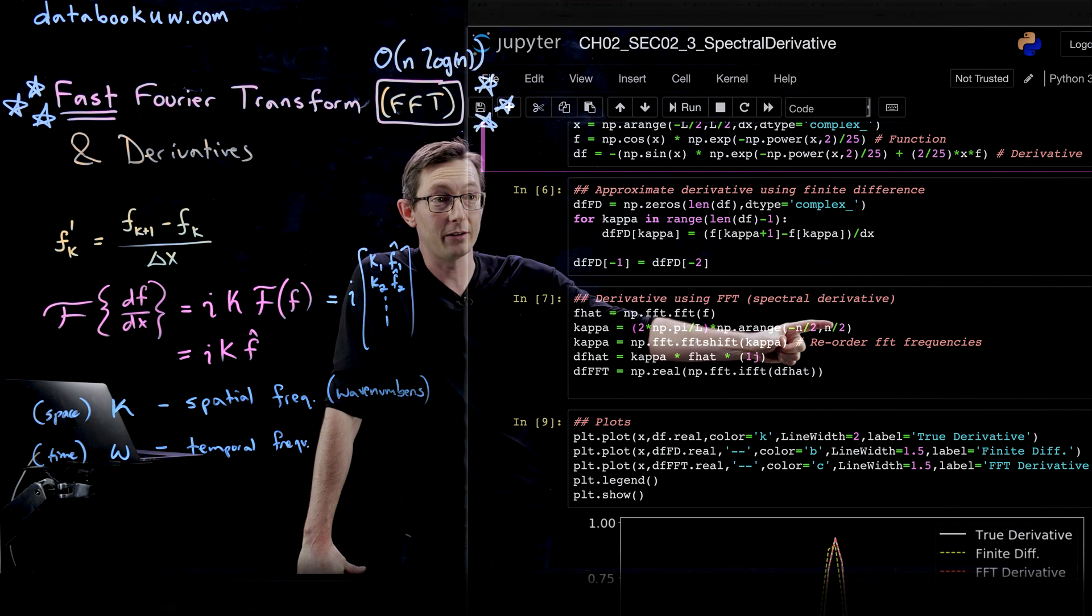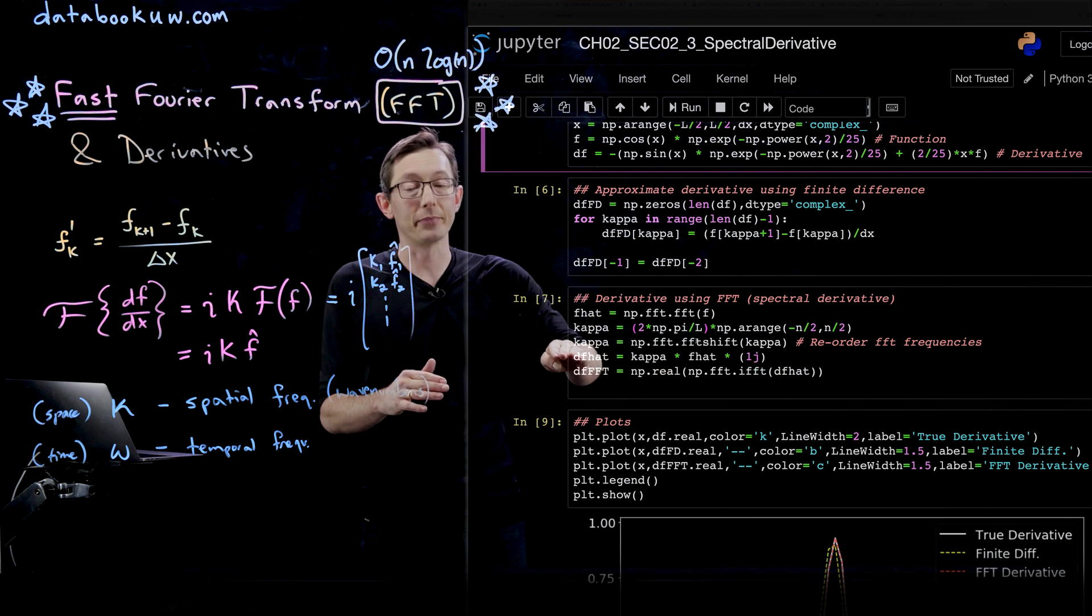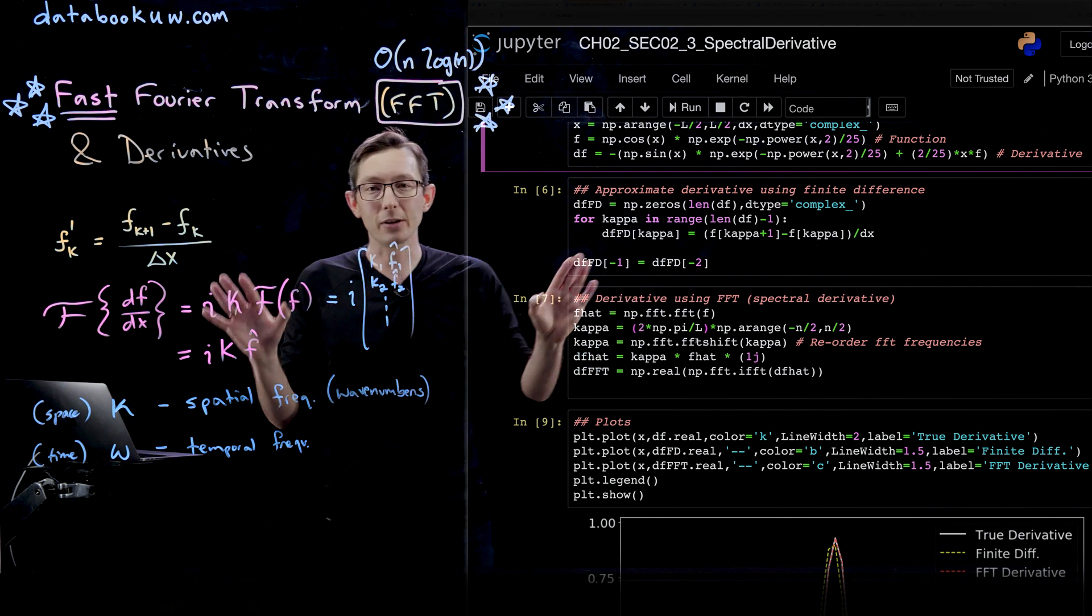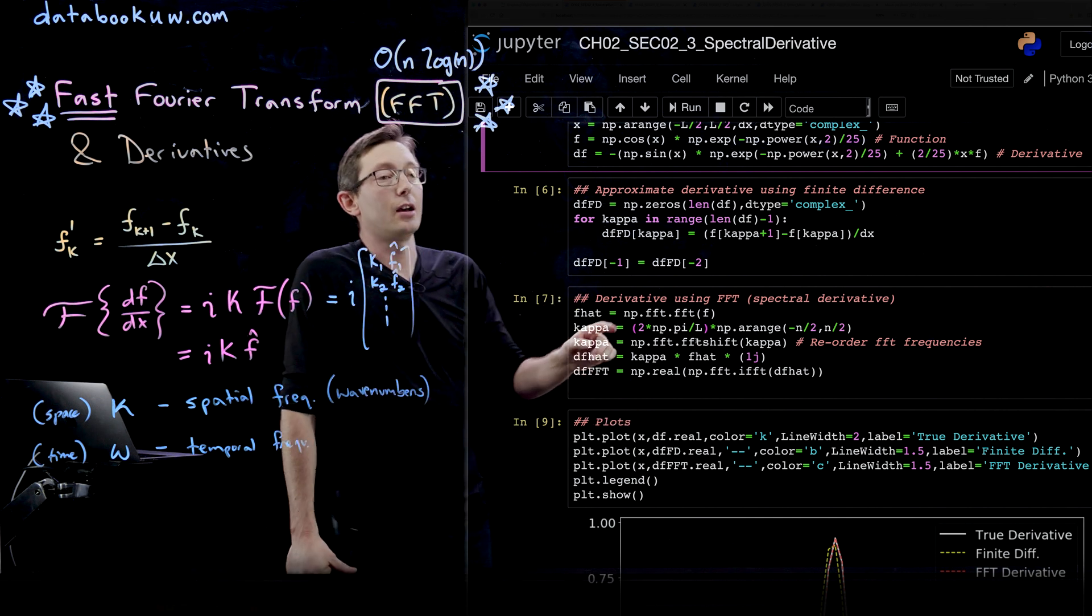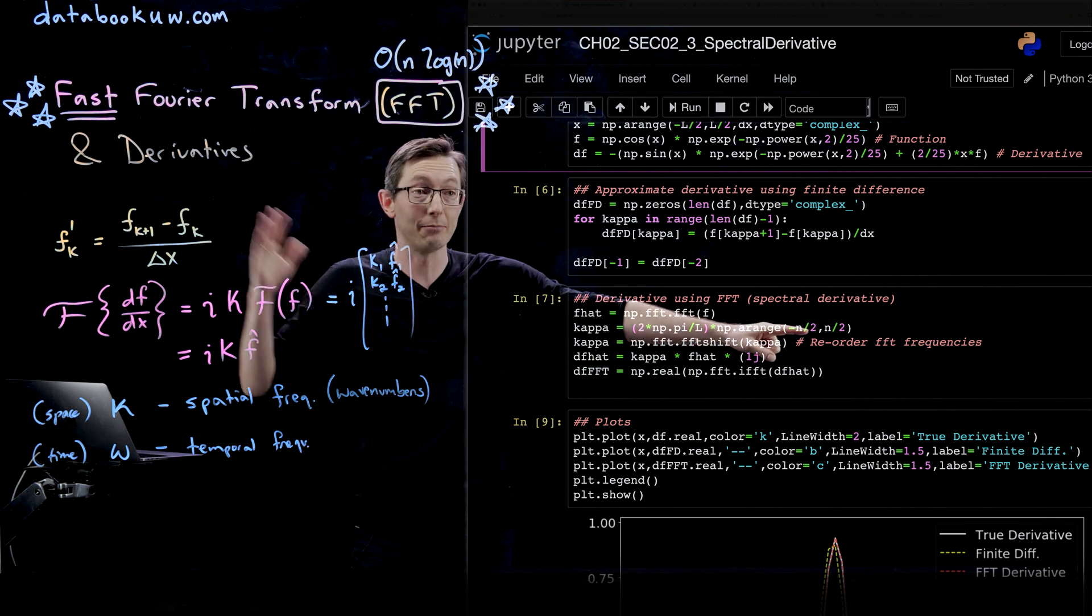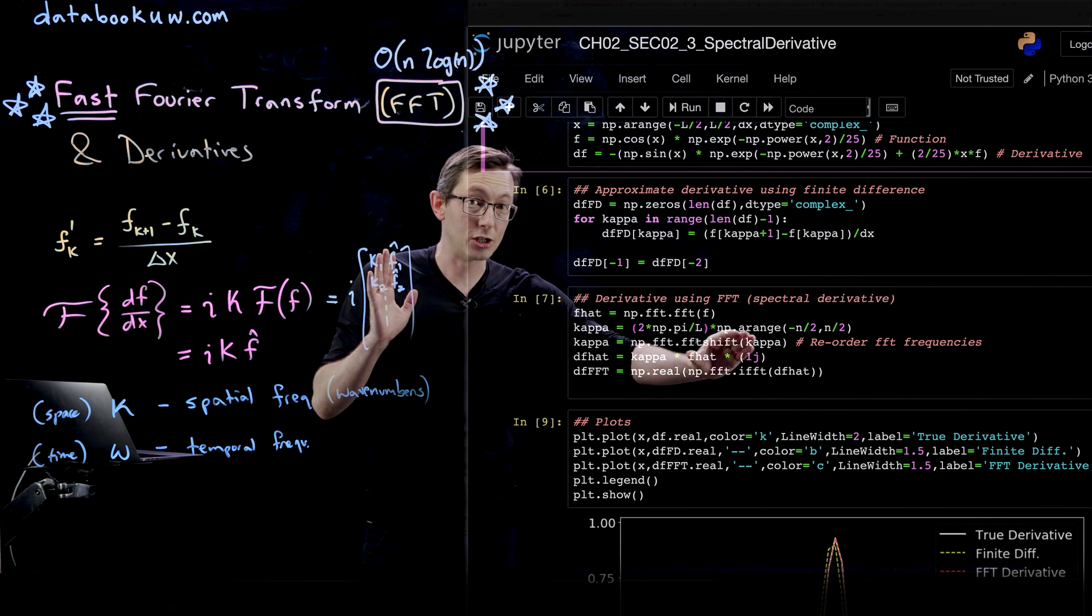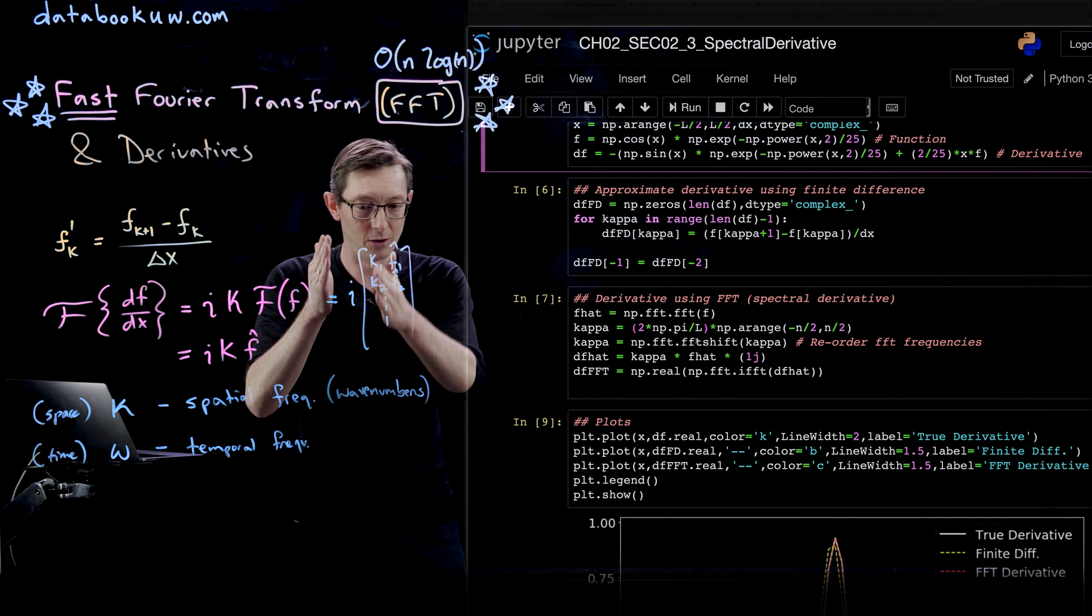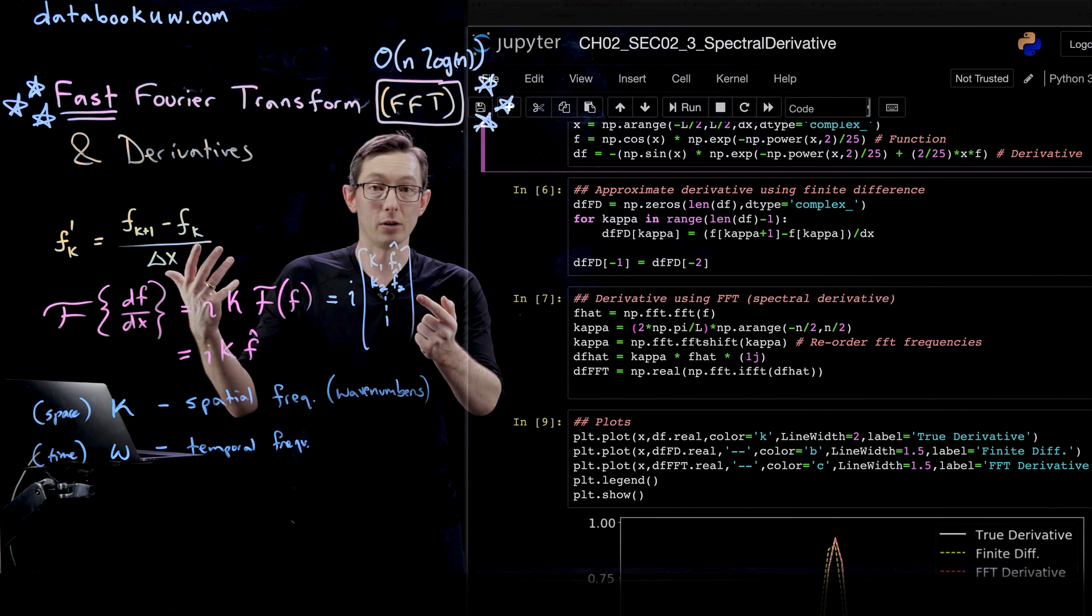If you define your frequencies this way, you run this fft shift command and it orders them in the same ordering that's consistent with how it orders the frequencies in the fast Fourier transform. This is always a little confusing. It's kind of a mess. Every language organizes these frequencies differently. Basically, you just have to remember these two lines of code. You create a vector of frequencies from minus n over 2 to n over 2 in these fundamental units, then run the fft shift command and it'll reorder those into the right ordering. That's to make sure those kappas are apples to apples with what those frequencies in f-hat correspond to.